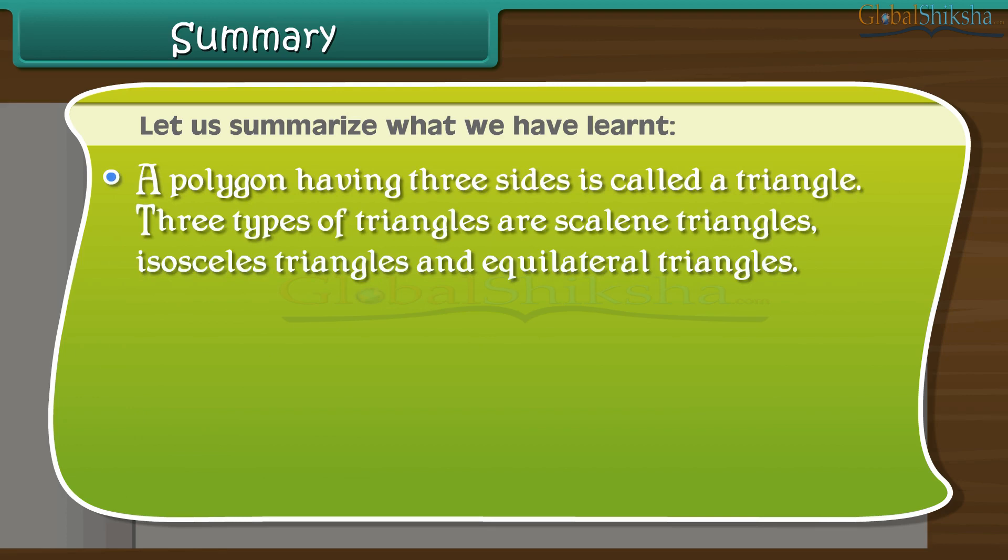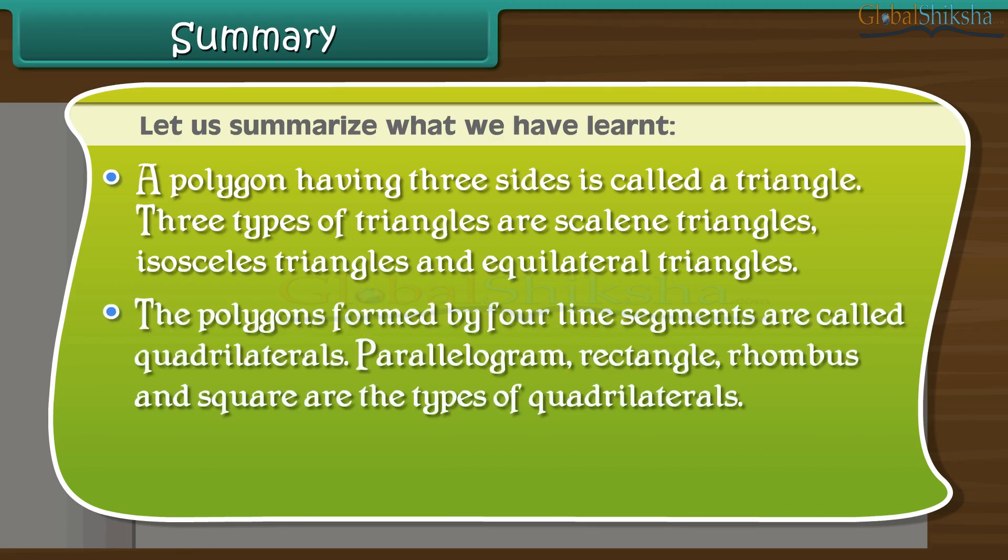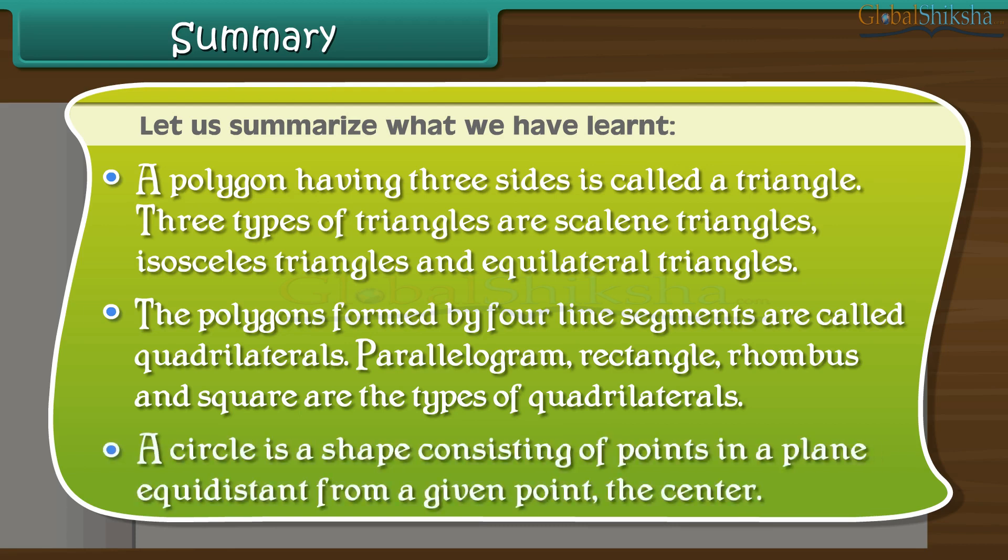Three types of triangles are scalene triangles, isosceles triangles, and equilateral triangles. The polygons formed by four line segments are called quadrilaterals. Parallelogram, rectangle, rhombus, and square are the types of quadrilaterals. A circle is a shape consisting of points in a plane equidistant from a given point, the center. Thank you.